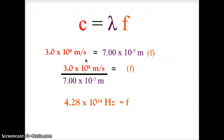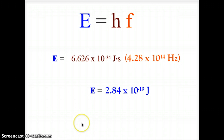The frequency works out to 4.28 × 10¹⁴ hertz. We then plug that into E = hf: multiplying 6.626 × 10⁻³⁴ joule-seconds by 4.28 × 10¹⁴ hertz gives an energy of 2.84 × 10⁻¹⁹ joules. This is the energy created by the red light in the lithium flame — the energy value given to that sample of salt being burned.